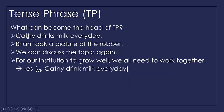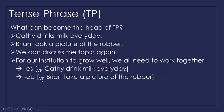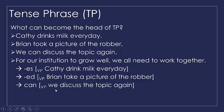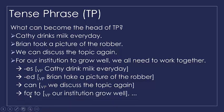In the first sentence, 'Kathy drinks milk every day,' if we take the VP, '-s' as the head of a TP takes the VP 'Kathy drink milk every day.' Then we have -ED, which takes VP 'Brian take a picture of the robot.' Then we have 'can' as the head of a TP, with 'we discuss the topic again' as the complement. And for 'to' — our institution is the specifier of 'grow,' and 'well' is an adjective. So we can have three kinds of T.